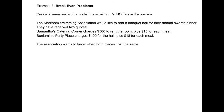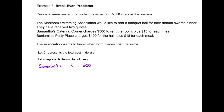The association wants to know when both places cost the same. Step 1: define our variables. Let C represent the total cost in dollars, and let N represent the number of meals. Step 2: generate the equations. At Samantha's, the total cost is $500 plus $15 × N. At Benjamin's, the total cost is $400 plus $18 × N. We now have a linear system.